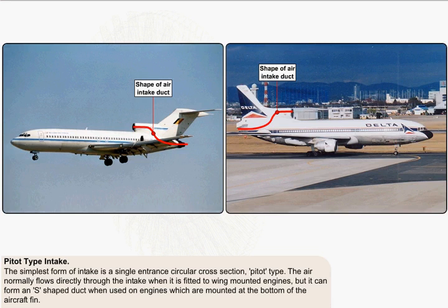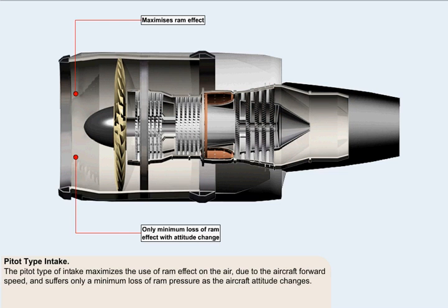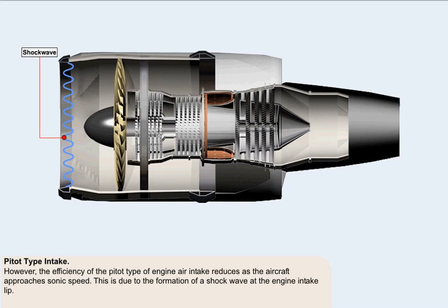Crosswind take-offs can cause the airflow through this type of intake to become unstable. The pitot type of intake maximizes the use of ram effect on the air due to the aircraft forward speed and suffers only a minimum loss of ram pressure as the aircraft attitude changes. However, the efficiency of the pitot type of engine air intake reduces as the aircraft approaches sonic speed. This is due to the formation of a shockwave at the engine intake lip.